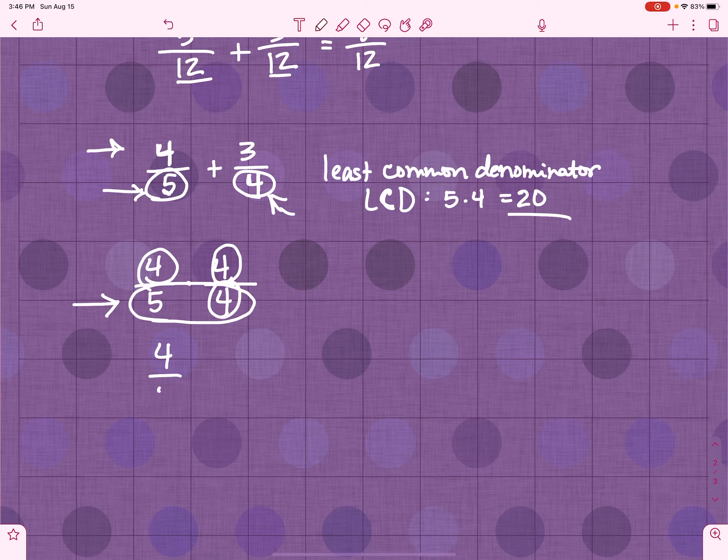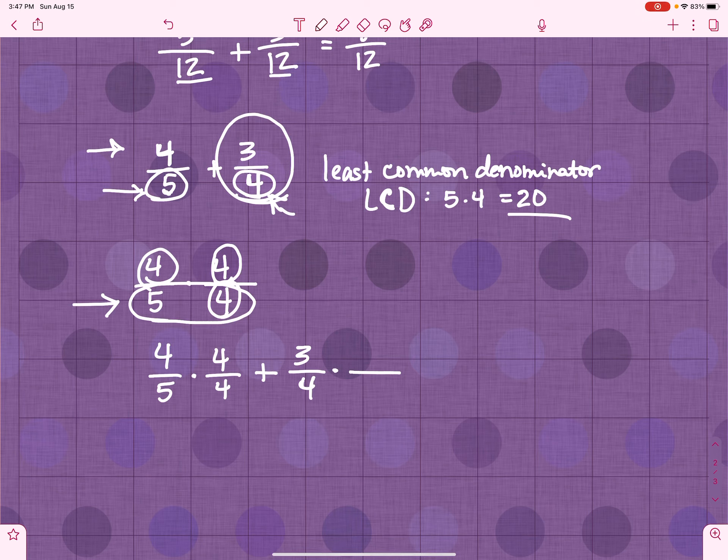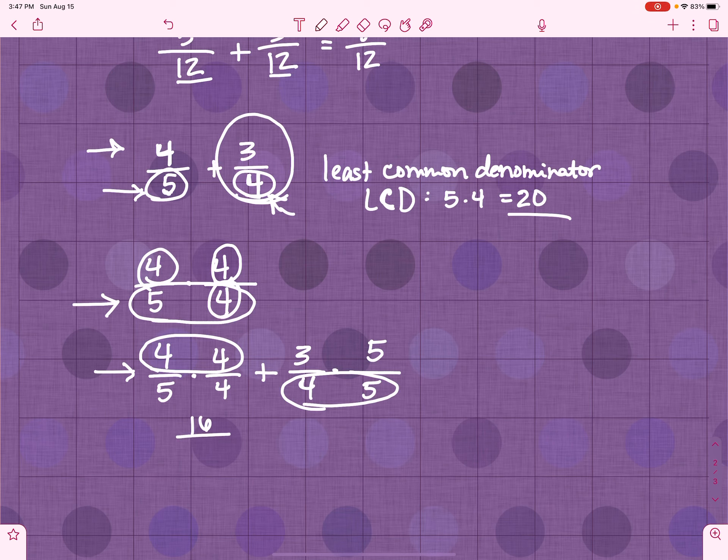So, I take 4 5ths and I'm going to multiply it by 4 over 4. Then, I have to take this 3 4ths and I have to do the same thing to it. But this time, I have to multiply it by 5 over 5 because I want a 20 down here.